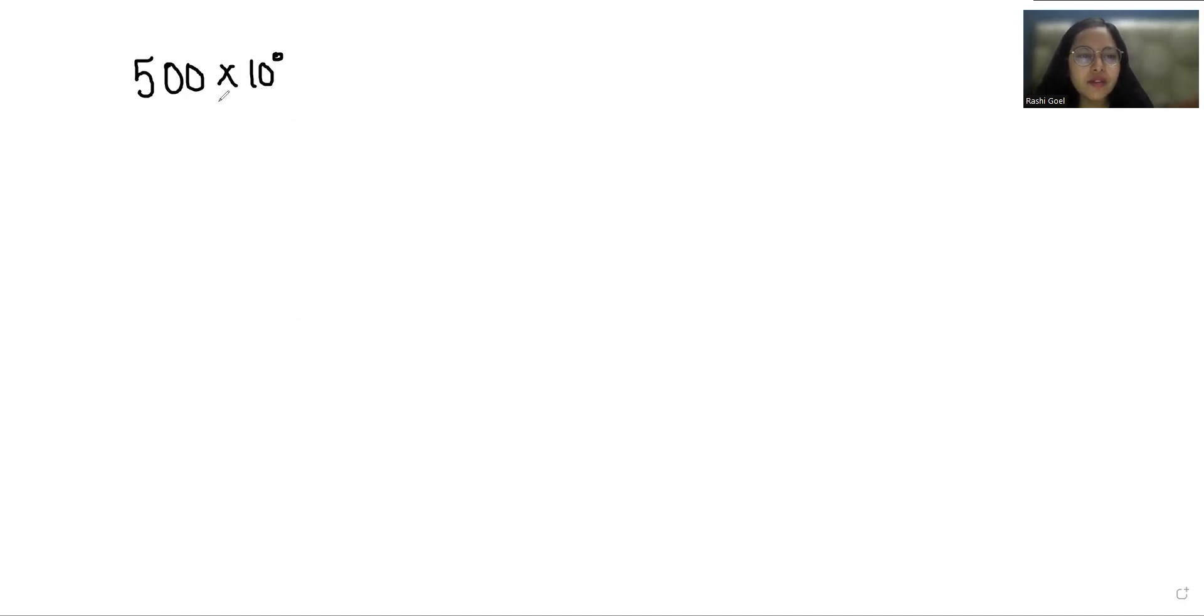We know that in 500 × 10^0, the exponent is 0. Since the exponent is positive, our answer comes in numerator form. If it were negative, like 10^-1, we could write it as 1/10. But with 10^0, our answer comes in numerator form.